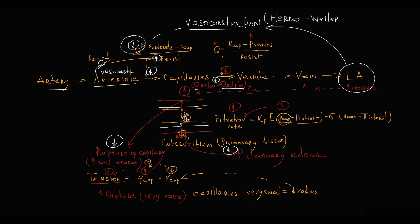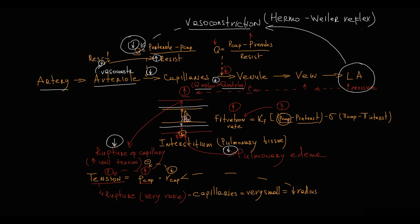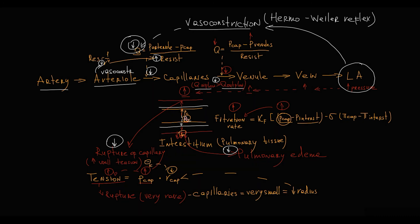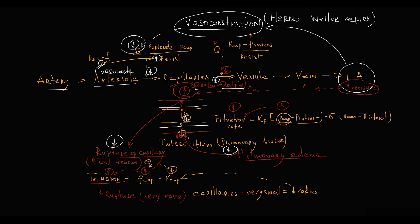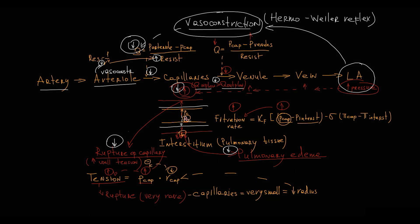So, Hermoveli reflex is a compensatory vasoconstriction of pulmonary blood vessels in response to distension of the left atrium, which is caused by pathological elevation of left atrial pressure that subsequently causes pathological elevation in capillary hydrostatic pressure leading to dangerous complications. The constriction of pulmonary vessels decreases pulmonary capillary hydrostatic pressure, and thereby prevents these potentially dangerous complications.